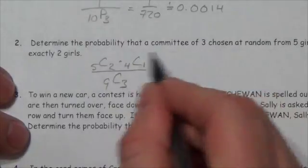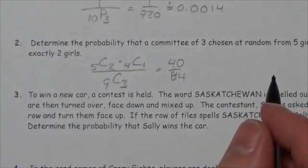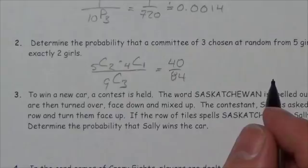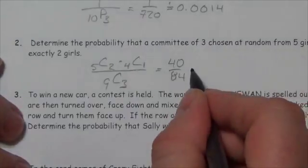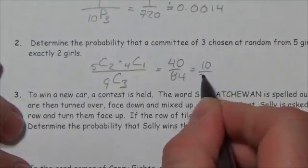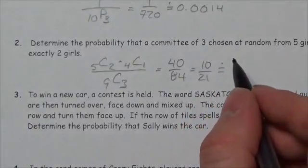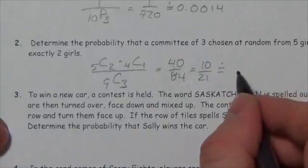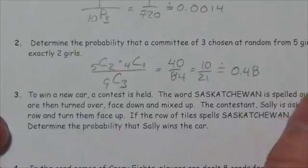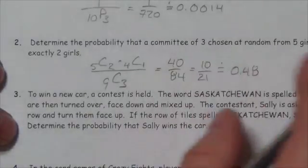Put that all together, and the numerator will become 40 over 84. And then we can just simplify that fairly simply because they're both divisible by four. That's going to give you 10 out of 21. That's as good as it's going to get. And that's approximately equal to 0.48. That's about roughly 48% probability, or 48% chance that that's going to happen.